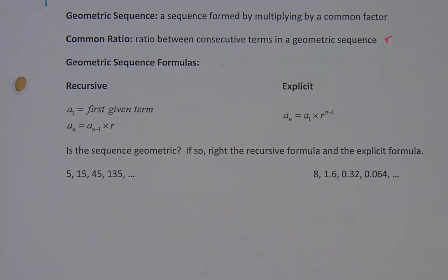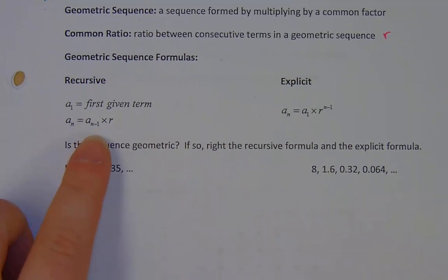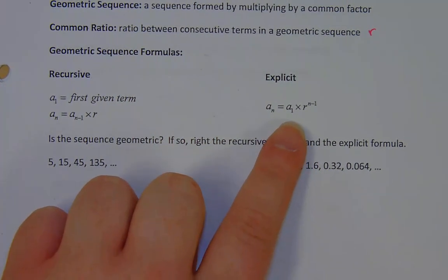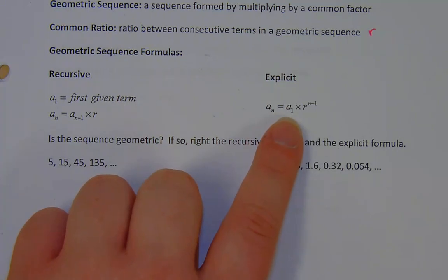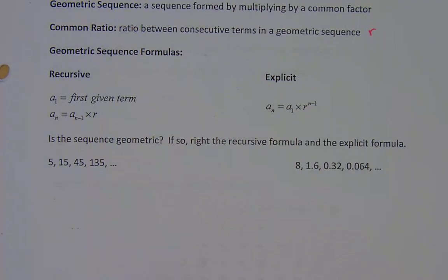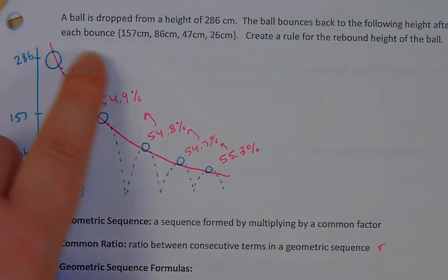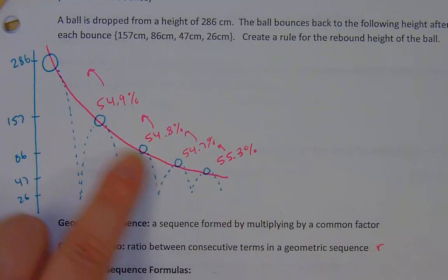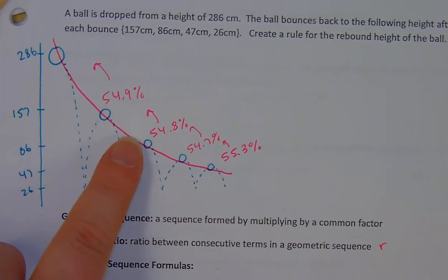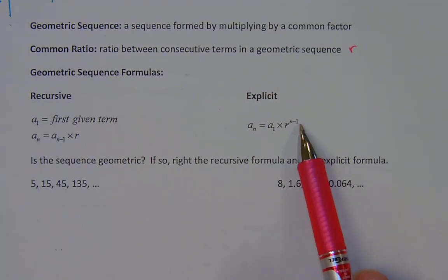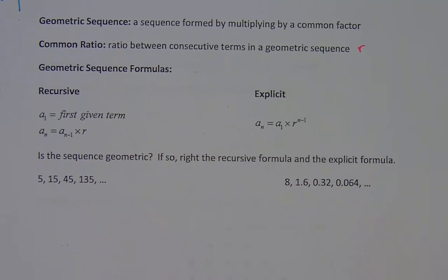For an explicit formula, any new term a-sub-n is our first term times that ratio to the power of n minus 1. Because in a sequence, we keep multiplying by that same ratio over and over. By the time we get to the fourth term, we've multiplied by that ratio 1, 2, 3 times — or that ratio cubed. That's why we multiply by the ratio to the power of n minus 1.